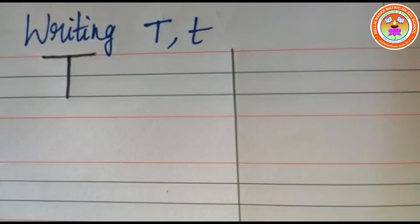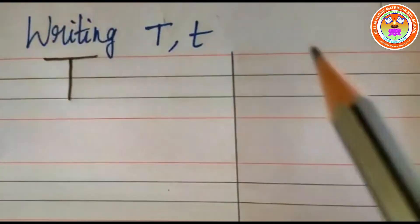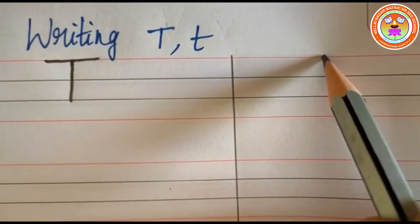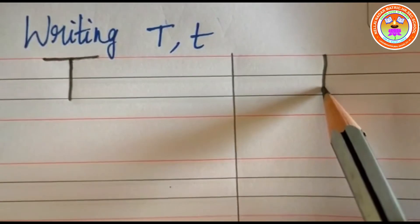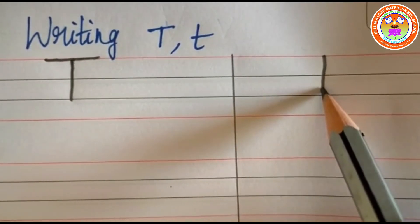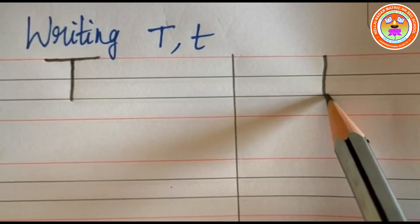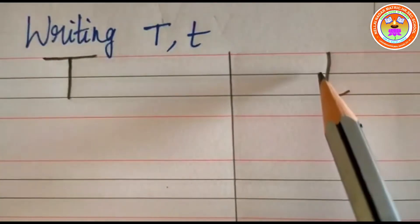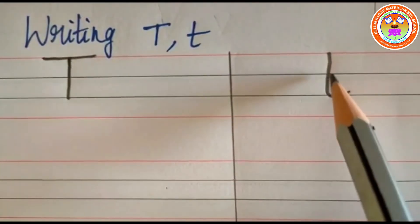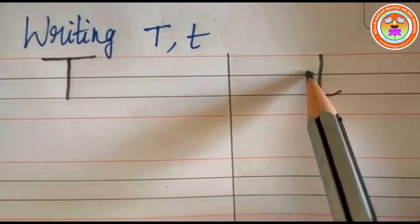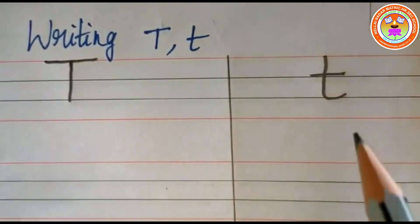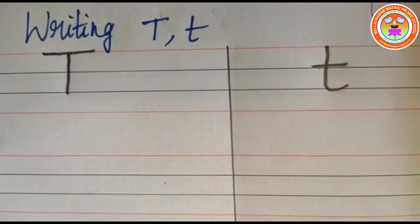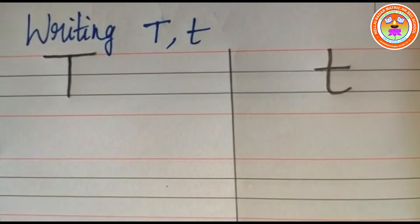For writing small letter T, touch on the first red line and then put one standing line like this, and then put one small curve. You have to touch the second blue line and put one small curve like this. Again on the first blue line put one sleeping line like this. This is small letter T. Like this you also write in all the lines and complete it.